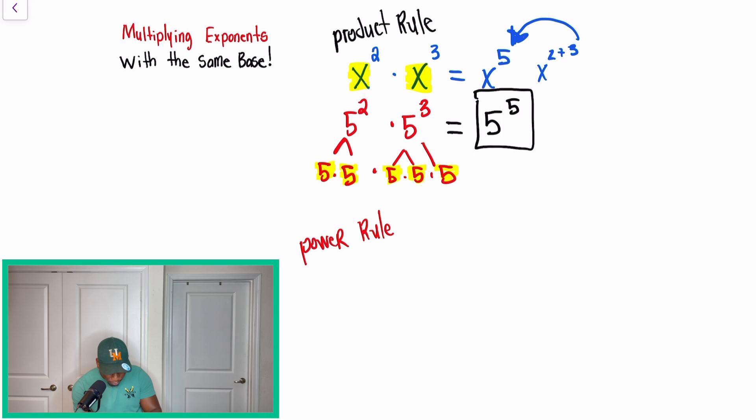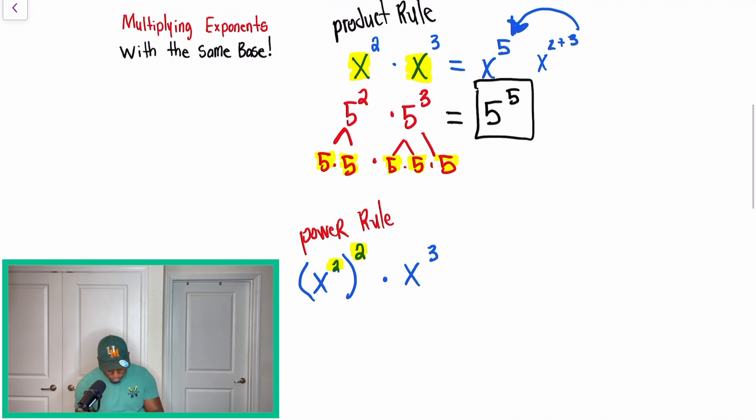So let's say we have a very similar problem. We have x squared, and then we're going to put this in parentheses. And then on the outside, we have one more exponent. And then now we're going to multiply that by x to the third. So guys, what I want you to understand is when you see a problem like this, where you have an exponent, and then you have to raise it to another power, there's another exponent, you're going to multiply. So what we do, we're going to take x squared, and we're going to multiply it. So now what we have is we're going to have x to the fourth power. Because once we multiply our exponents of two times two, that's what gives us four.